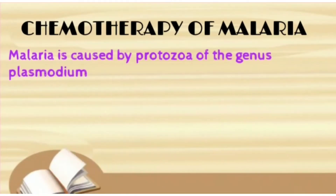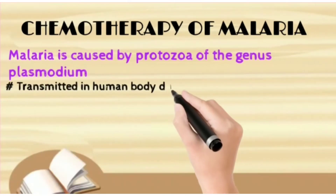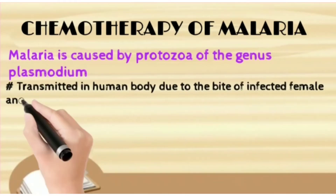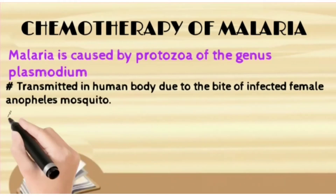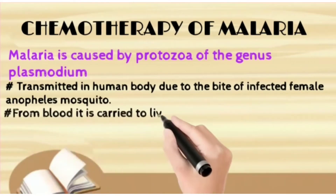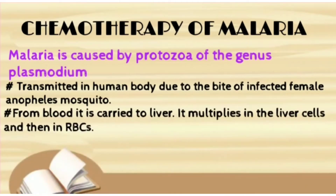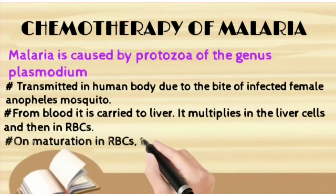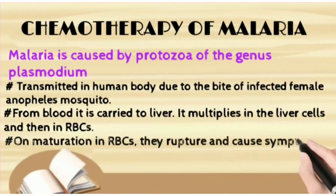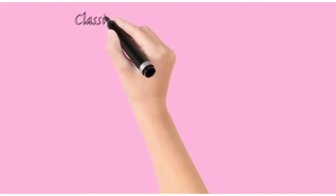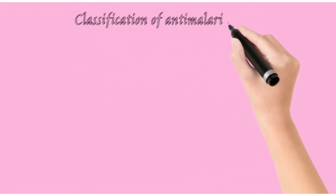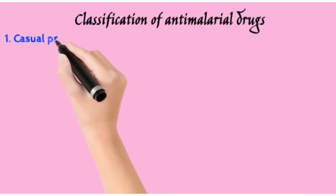Malaria is caused by protozoa of genus Plasmodium and is transmitted in the human body due to the bite of the female Anopheles mosquito. From the blood, it is carried to the liver where it multiplies in liver cells and then in RBCs. On maturation in RBCs, they rupture and cause symptoms of malaria. The male and female sexual forms enter the mosquito when it sucks blood and undergo the sexual cycle. Now we will talk about the classifications of anti-malarial drugs.